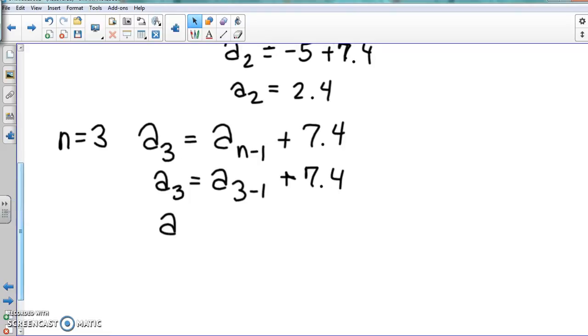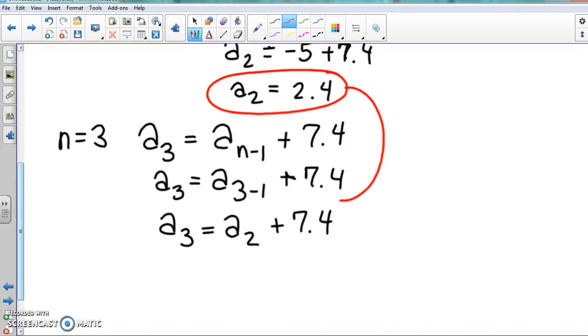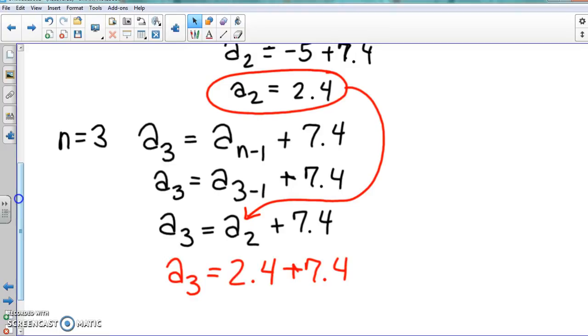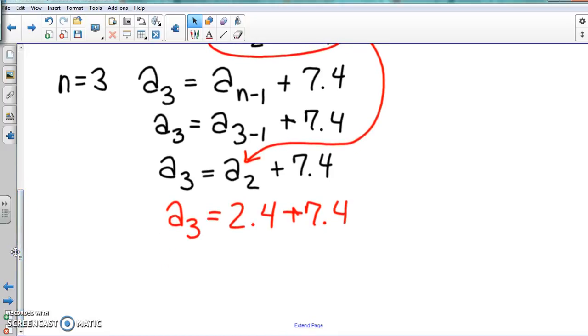So here, 3 minus 1 is 2, 7.4 there. And again, we're taking the term right before that and we're substituting directly into the problem. And really, once we start doing this multiple times, that's what happens all the time. We just substitute the term that's right before it. And then here, again, we just add it and then we're done. So 2.4 and 7.4 equal up to be 9.8.